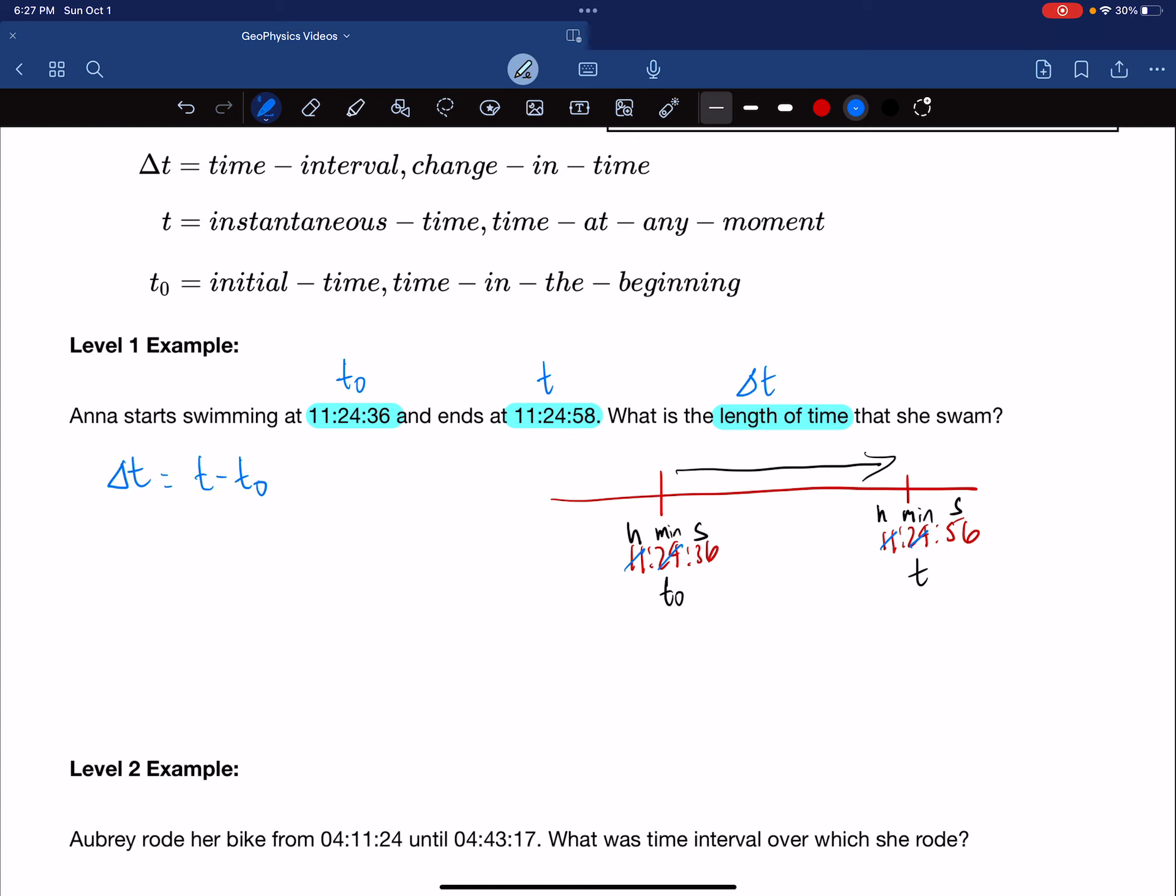So we can then define this as t₀ is 36, and the instantaneous is 56. So when we list our givens, we can say t equals 56 seconds, t₀ is 36 seconds. Oh, it's 58 seconds, excuse me, 58 and 58, 58, and this is 36 seconds, and we are looking for delta t.